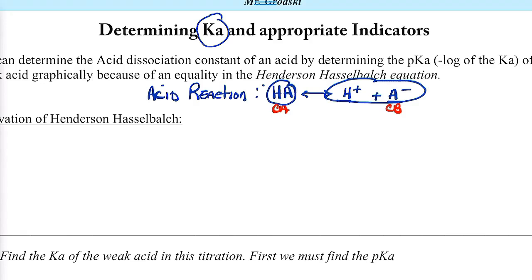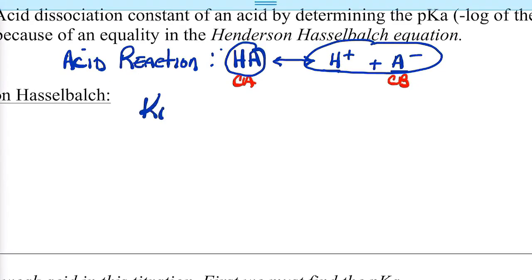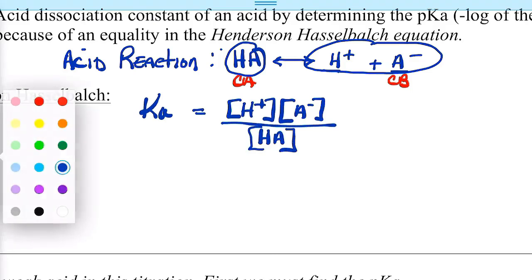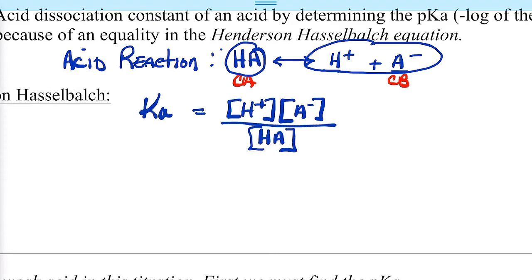We can express how well this acid becomes H⁺ and A⁻ by an equilibrium expression. We can measure how much it goes forward. The Ka is equal to the concentration of H⁺ times the concentration of the conjugate base A⁻, all over the concentration of HA. Remember, if we have a weak acid, weak acids barely dissociate — they don't go forward that much. We'll have small amounts of products but huge amounts of unreacted acid, so Ka values are going to be small.